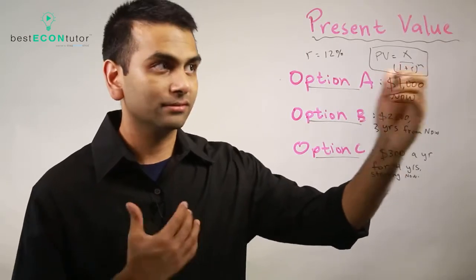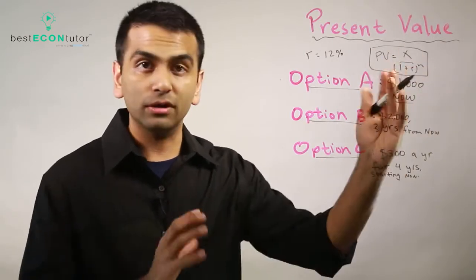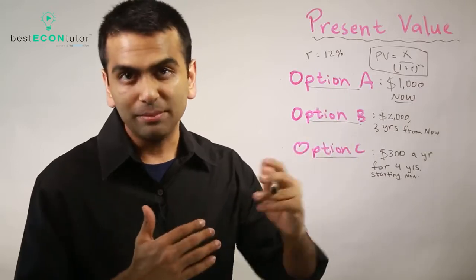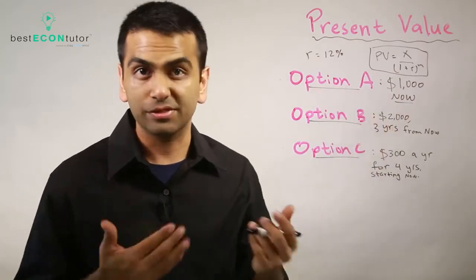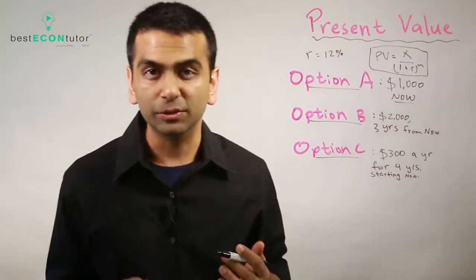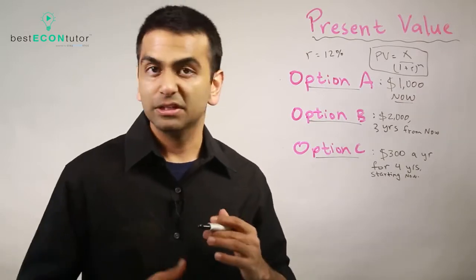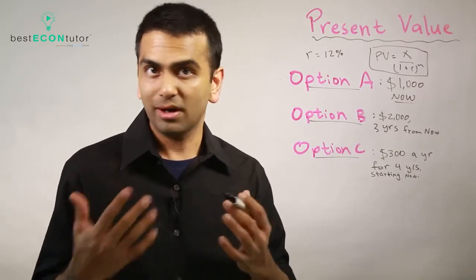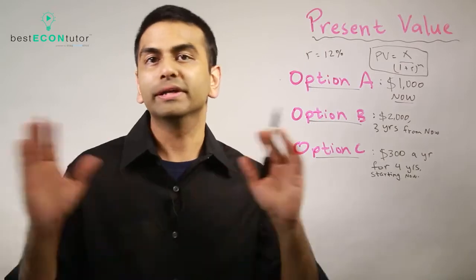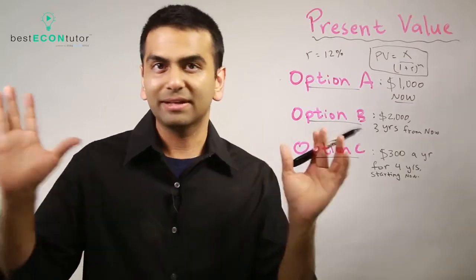the bigger that N is, that's a bigger denominator which means an overall smaller number. That's why money given in the future is not worth it. If you were to say what's more valuable, $100,000 given to you five years from now or $100,000 given to you 30 years from now?